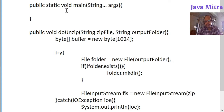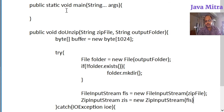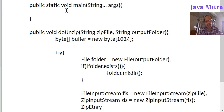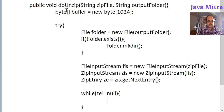Now we create a FileInputStream object from the zip file, and then a ZipInputStream called zis by passing fis into the constructor of the ZipInputStream class. Now we need to get the entry object with the help of the getNextEntry() method, and we loop until it is null.